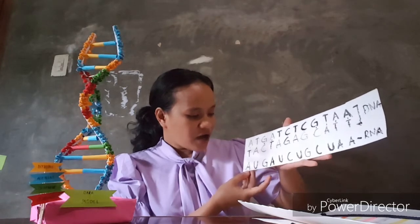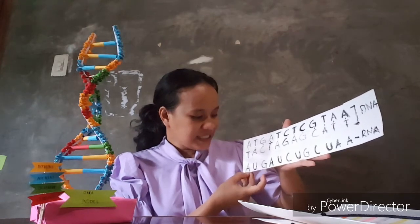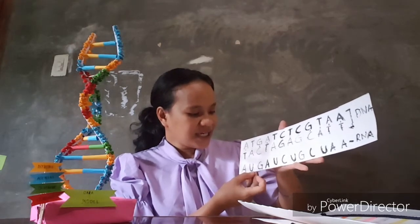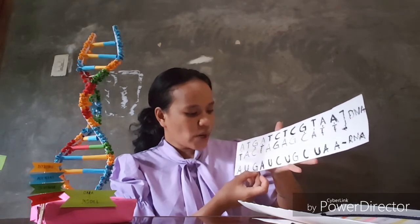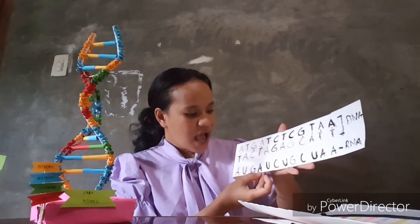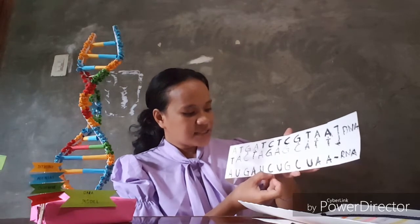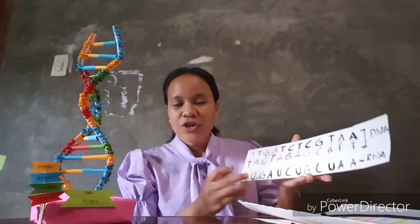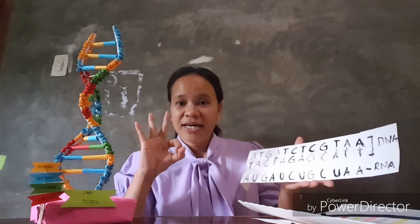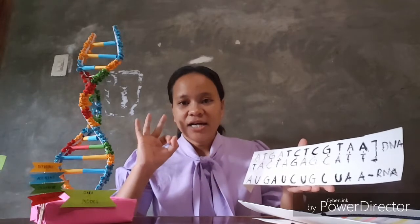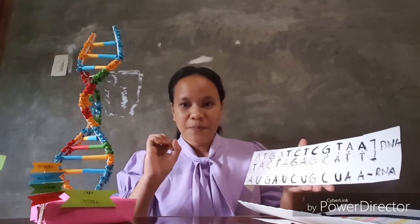I have adenine, uracil, guanine, adenine, uracil, cytosine, and so forth. If we go through with codons, we group them as sets of three nucleotides.